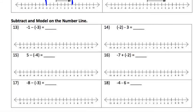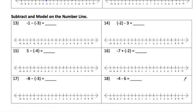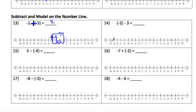Continuing with our modeling at the bottom: remember that minus-minus becomes a plus. Start at zero, go to negative 1 first, then add 3 — go 1, 2, 3 — and you end at positive 2.